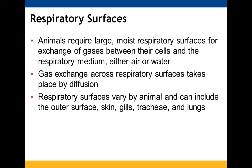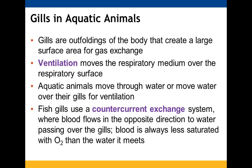Respiratory surfaces are going to vary — they could be your outer surface, your skin, your gills, your trachea, or your lungs. Gills are the outfoldings of the body; they give you a greater surface area for those gases to be exchanged. Ventilation moves the respiratory medium over the respiratory surface — in this case, the gills.